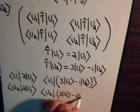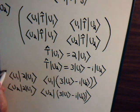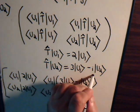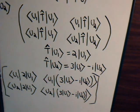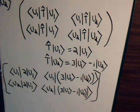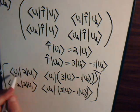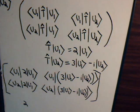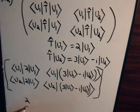So we have a 2 by 2 array of elements. For the first entry: the inner product of U1 with U1 is 1, because these are orthonormal basis vectors, times 2 — so this comes out to 2. Directly beneath that, the inner product of U2 with U1 is 0, because these are orthonormal basis vectors, so that entry is 0.